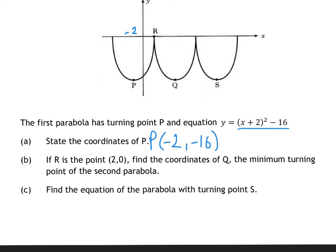It then tells us that R is at 2, 0. So we have to find the coordinate of Q using a method called stepping out. If P is at minus 2 and R is at 2, from minus 2 to 2 is half a quadratic, and I'm jumping up 4. So to get to Q, I'm going to jump up another 4, so the x-value for Q would be 6. So minus 2 plus 4 is 2, plus 4 is 6. So Q is along 6, and it's down the same as P, so it's down 16.